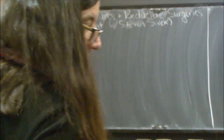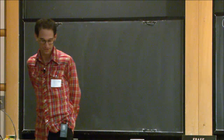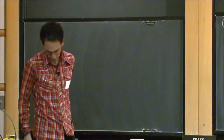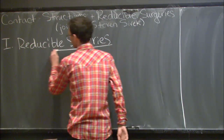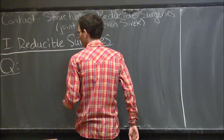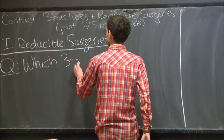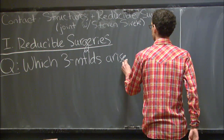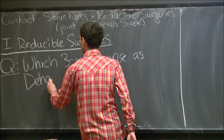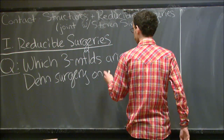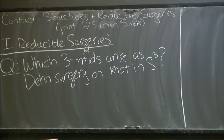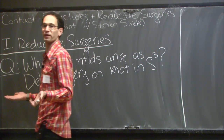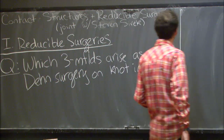Thanks for the invitation to speak here—it's great to hang out with my 3-manifold topology friends. Everything I'm going to say is joint with Steven Sivak. Let me start by phrasing a vague question: which three-manifolds arise as Dehn surgery on a knot in S³? We take a knot in S³, remove a tubular neighborhood, reglue it back in, and we want to see what kinds of manifolds we can obtain.